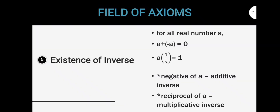The last one is the existence of inverse. Inverse should make you think opposite. It states that for all real number A, A plus negative A is equal to 0, and A multiplied to 1 over A is equal to 1. We call negative A the additive inverse and the reciprocal of A the multiplicative inverse, because the sum of a number and its opposite is 0, and the product of a number and its reciprocal is equal to 1. That's why negative A is called the additive inverse and reciprocal of A is called the multiplicative inverse.